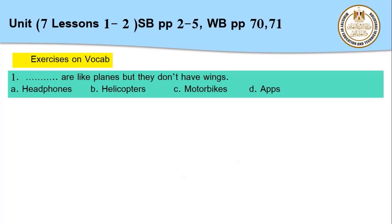Now let's check your answers. Number one: these space vehicles are like planes but they don't have wings. Choices: headphones, helicopters, motorbikes, or apps. The correct answer is 'helicopters,' because they are like planes but they don't have wings — لكن لا يوجد لهم أجنحة. Number two: Mona always wears something on the bus because she loves listening to music. Choices: headphones, inventions, technology, or solar panels. The correct answer is 'headphones.'